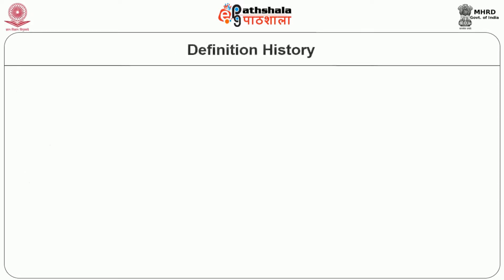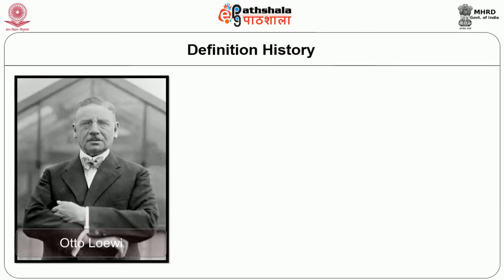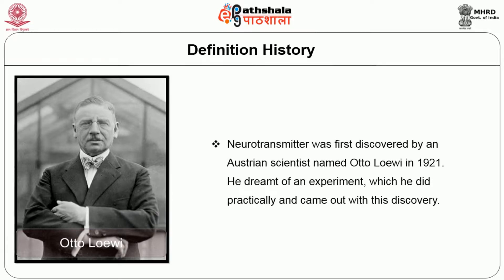Let us see about the definition and history of neurotransmitters. The existence of neurotransmitters was first discovered by an Austrian scientist named Otto Loewi in the year 1921. He dreamt of an experiment which he then performed practically and came out with this discovery.